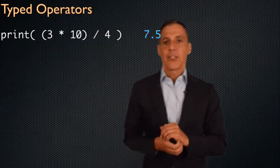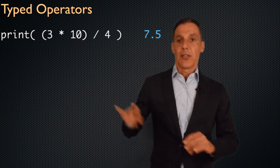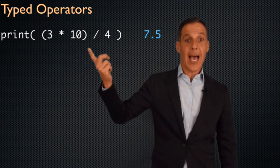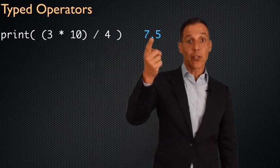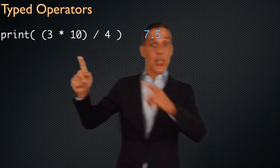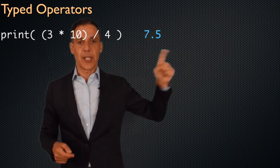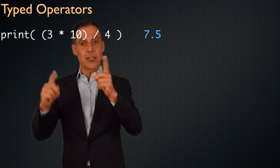Same thing here. Notice that 3 times 10 divided by 4 is not an integer, and so it hands you back a floating point number, even though all of these were simply integers. There's a way of converting this back into an integer, or there's a way of converting these into float, and I'll talk about that in a little bit.